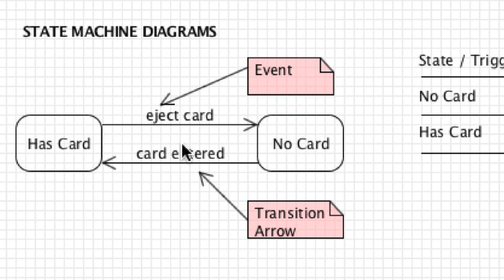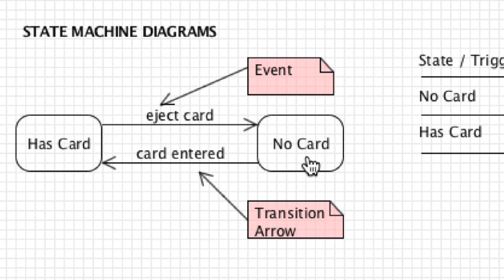Transitions, which are these arrows going backwards and forwards, are going to represent how states change. This is a state called 'has card' and this is another state called 'no card.' I'm using a common ATM example to diagram all this. The events that occur, like 'eject card' and 'card entered,' are going to trigger state changes, and these events are written across the transition arrows.